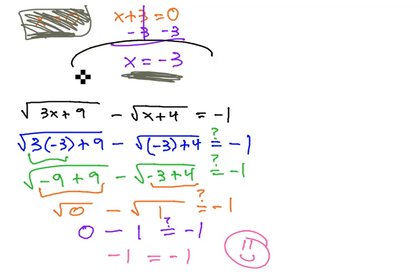And so, our only solution for this equation is x equals negative 3. The solution to the square root of 3x plus 9 minus the square root of x plus 4 equals negative 1.